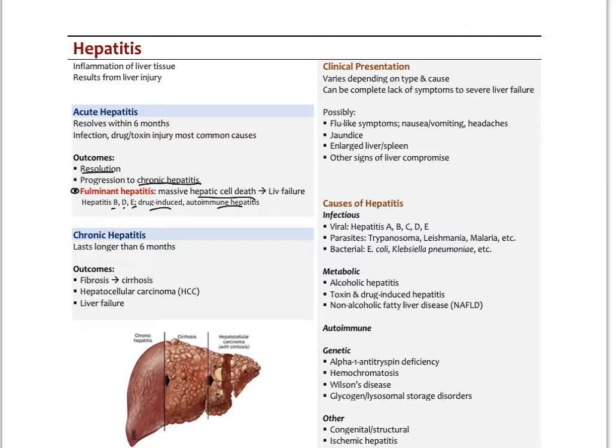We see that sometimes with hepatitis B, D, E, drug-induced hepatitis, and autoimmune hepatitis. Chronic hepatitis lasts more than six months and the outcomes are the laying down of fibrous tissue, collagen, fibrosis leading to cirrhosis, increased risk for hepatocellular carcinoma, and liver failure.